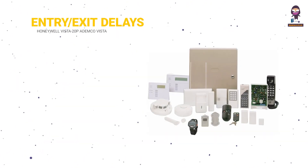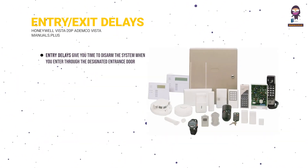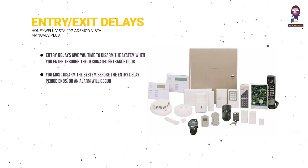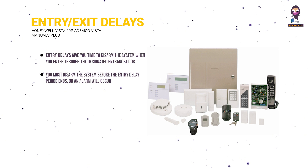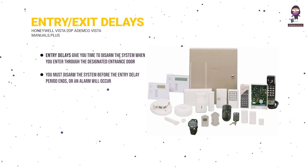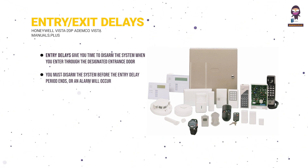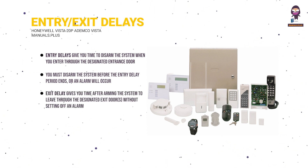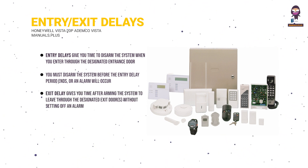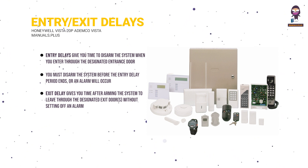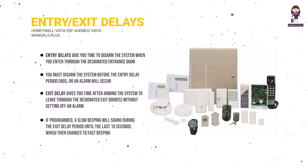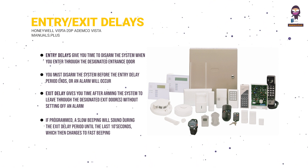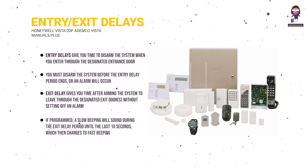Entry and exit delays. Entry delays give you time to disarm the system when you enter through the designated entrance door. You must disarm the system before the entry delay period ends, or an alarm will occur. The keypad beeps during the entry delay period, reminding you to disarm the system. Exit delay gives you time after arming the system to leave through the designated exit doors without setting off an alarm. If programmed, a slow beeping will sound during the exit delay period until the last 10 seconds, which then changes to a fast beeping.